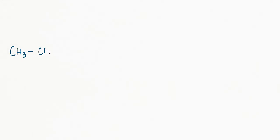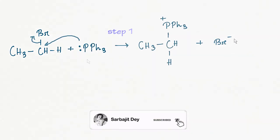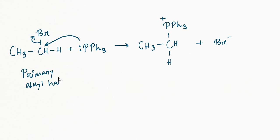The first step is an SN2 reaction in which the nucleophile is triphenylphosphine and the halide ion is the leaving group. As we know, primary alkyl halides react more readily than secondary alkyl halides, but tertiary alkyl halides cannot be used.